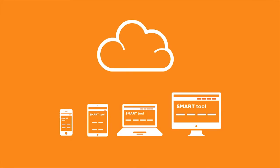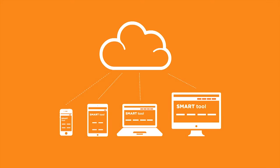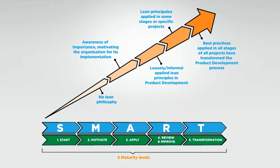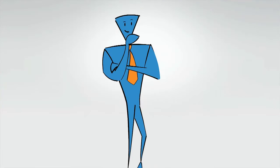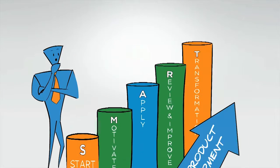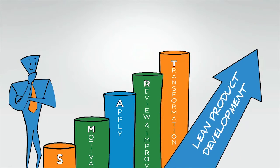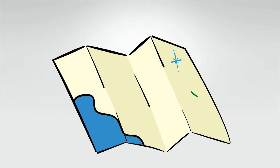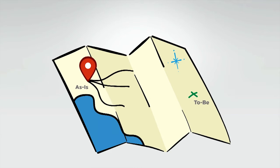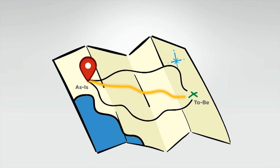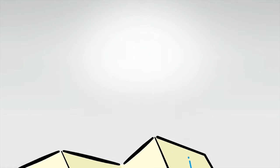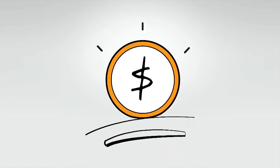Hello! Smart Maturity Assessment is a web-based tool that helps your organization to assess the maturity of currently used lean practices in product development. It helps you to define the desired future state and highlight the major opportunity areas, to quickly define a high-impact roadmap and for competitive price.